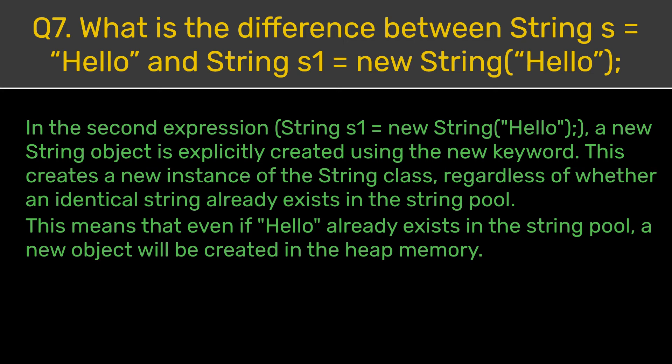In the second expression, String s1 = new String("hello"), a new string object is explicitly created using the new keyword. This creates a new instance of the String class, regardless of whether an identical string already exists in the string pool. This means that even if "hello" already exists in the string pool, a new object will be created in the heap memory.